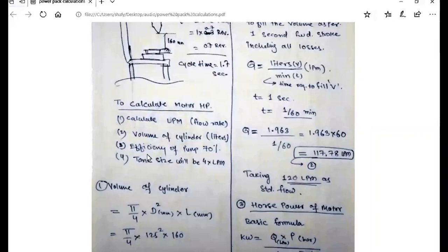So we put in the formula: diameter is 125 mm and length is 160 mm, so pi by 4, 125 squared times 160. So we get the volume of the cylinder.